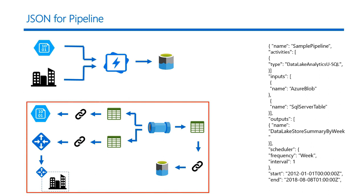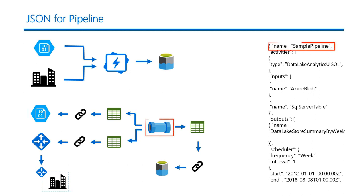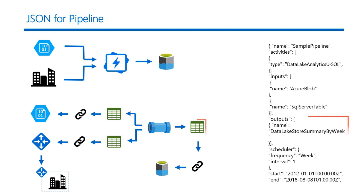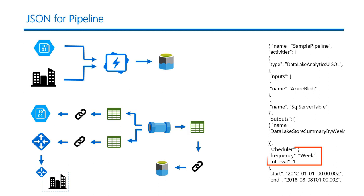On the right side, you see the JSON that is used to define the pipeline. In the JSON, I define the name of the pipeline, the type of activity running on the data, the input data sets consumed by the activity — namely the Azure Blob and the SQL table — and I also define where the output is stored, in this case a Data Lake store. Further, I define the schedule frequency for this pipeline, that is once a week. Note that the schedule frequency of the pipeline and the output data set need to match. I also define the start and end dates during which the pipeline will be active.